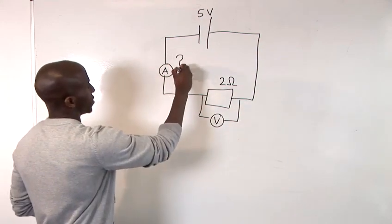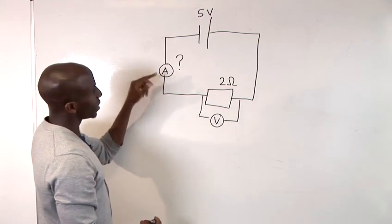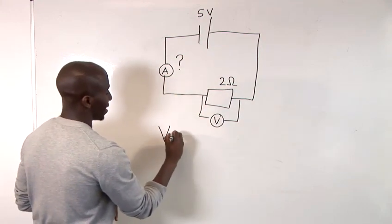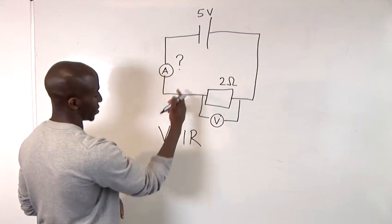So the question is, how much does this ammeter record? In your basic circuit, you would need to look at this type of equation to solve that answer.